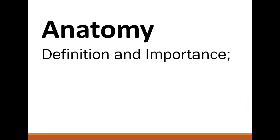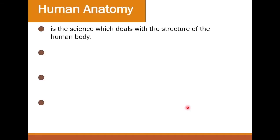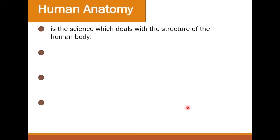The first part is the definition and importance of human anatomy. We are discussing human anatomy or medical anatomy because multiple types of anatomy exist — animal anatomy, plant anatomy, insect anatomy, microorganism anatomy. Here we are specifically concerned about human anatomy or medical anatomy; we can use both terms.